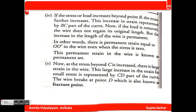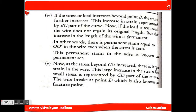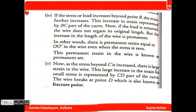If the load is increased beyond B, the strain further increases, and this increase in strain is represented by the BC part of the curve. If the load is then removed, the wire does not regain its original length. The increase in length of the wire becomes permanent — this permanent strain is known as the permanent set.